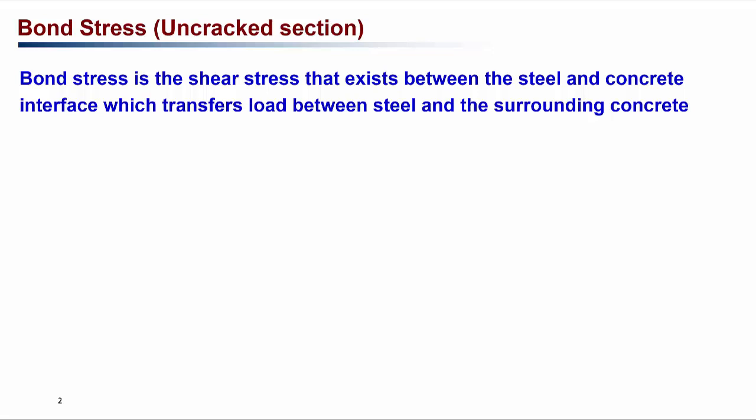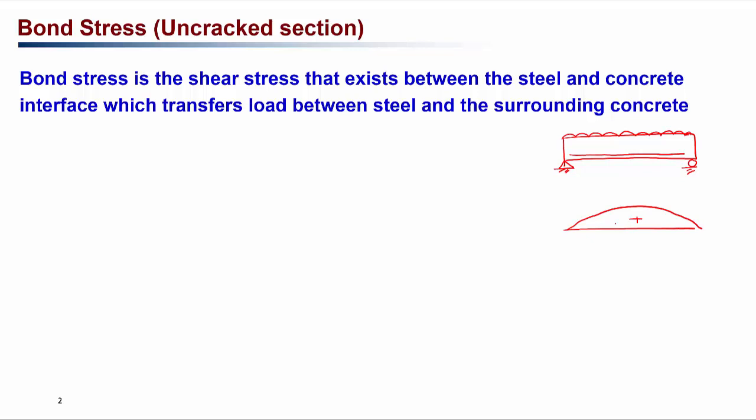For example, if we have a simply supported beam with reinforcement in the tension side, loaded with a uniformly distributed load, the bending moment shape will look like a parabola. We know that the concrete will take the compressive force and the steel in the tension side will take the tension force. However, no external load acts directly on the steel — the tension force is transferred to the steel from the surrounding concrete. The bond stress is the shear stress that develops at the steel-concrete interface which transfers this force from concrete to the steel.